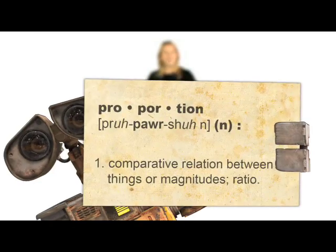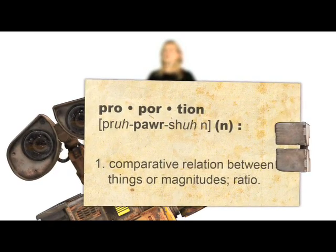And to answer that, we need to apply a proportion. That's right, WALL-E, a proportion is the relationship between things, such as the relationship between the size of the Earth and the size of the moon.